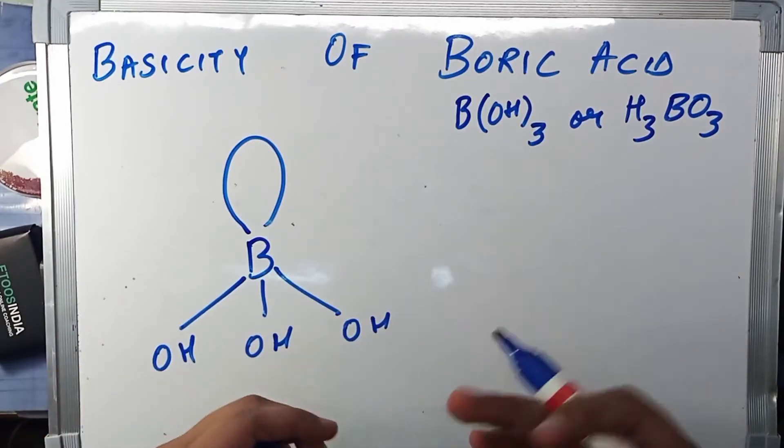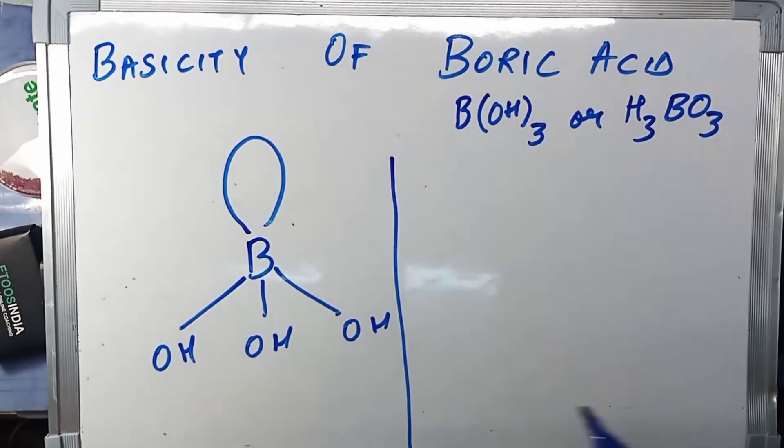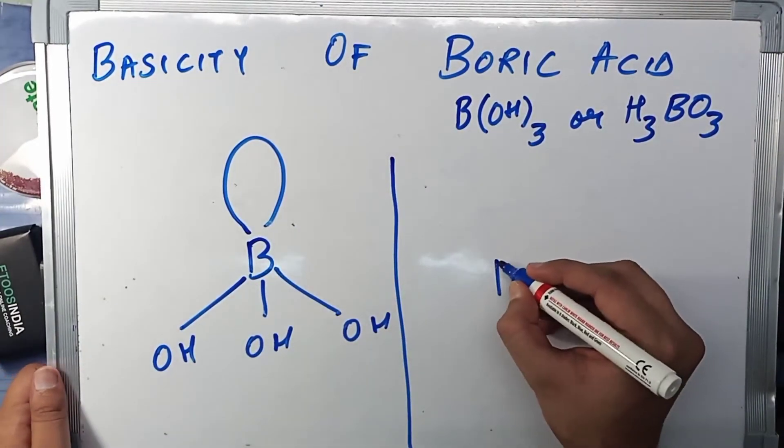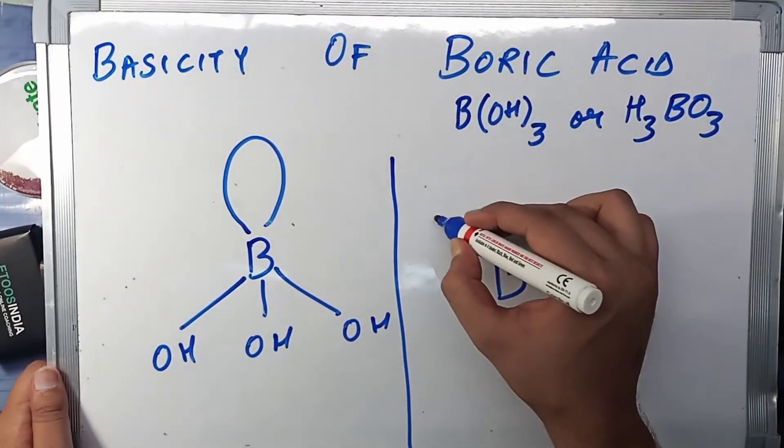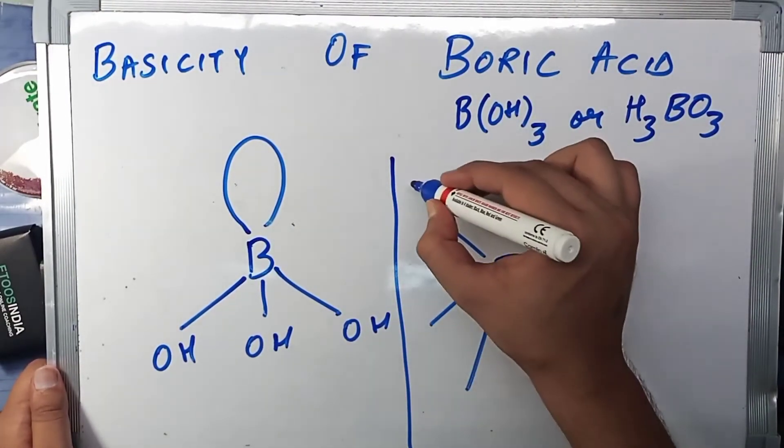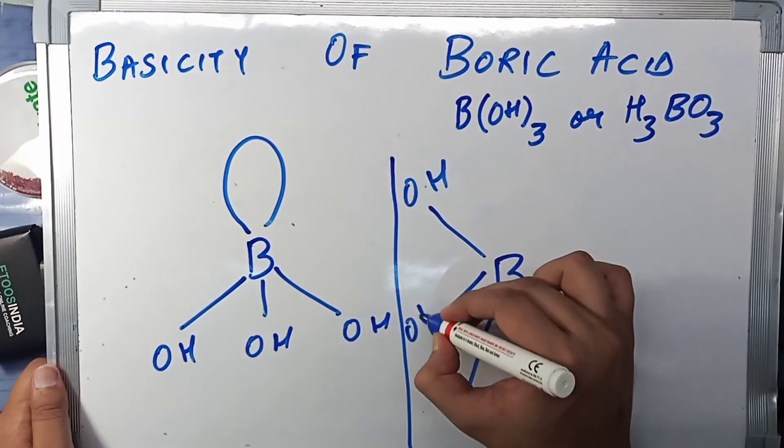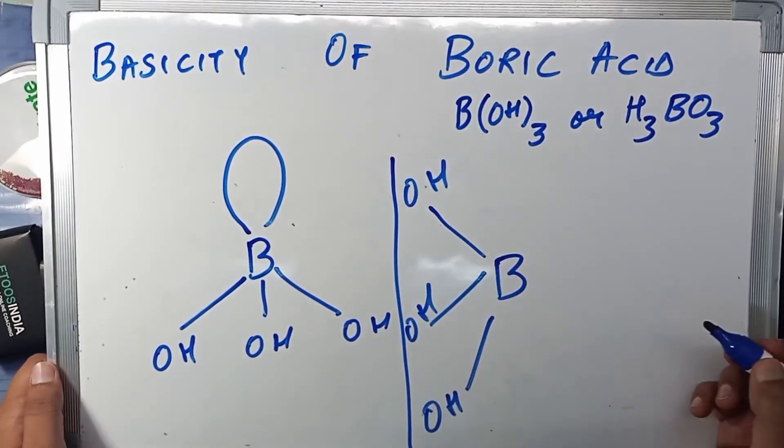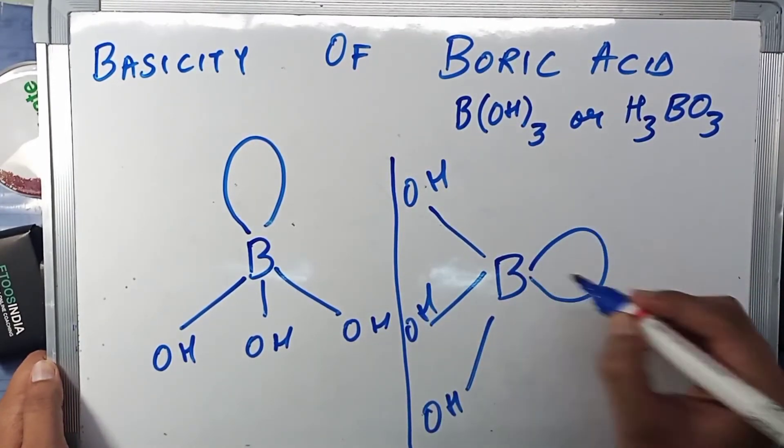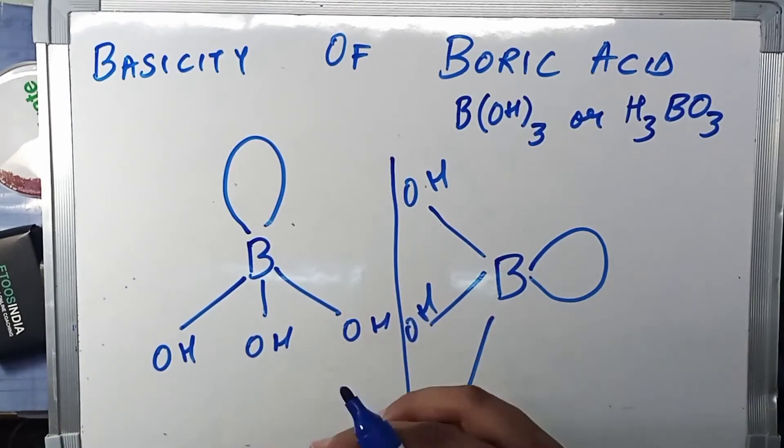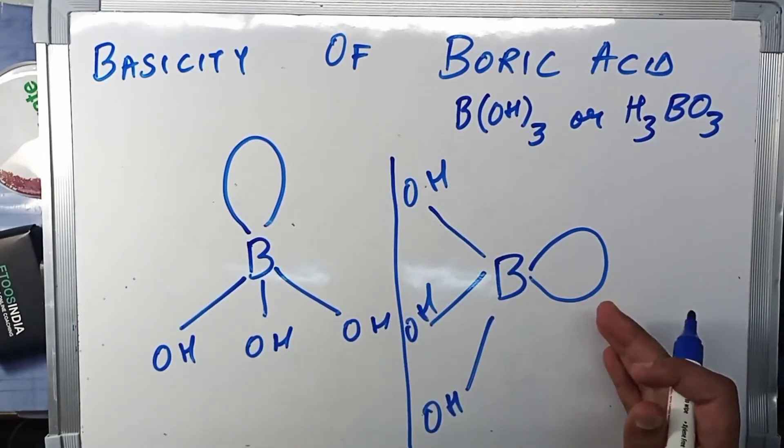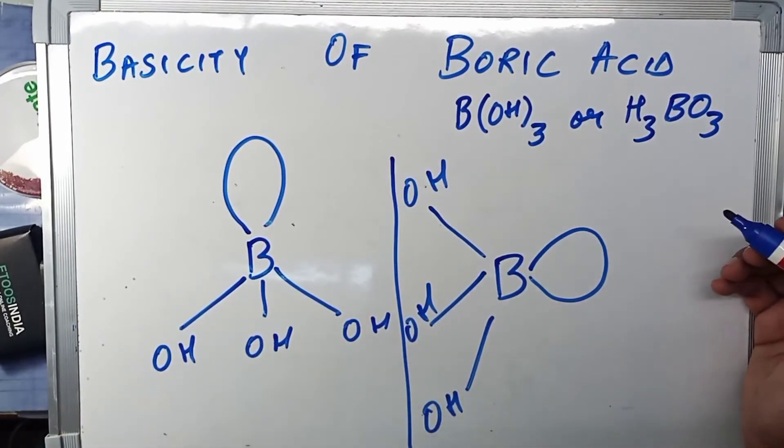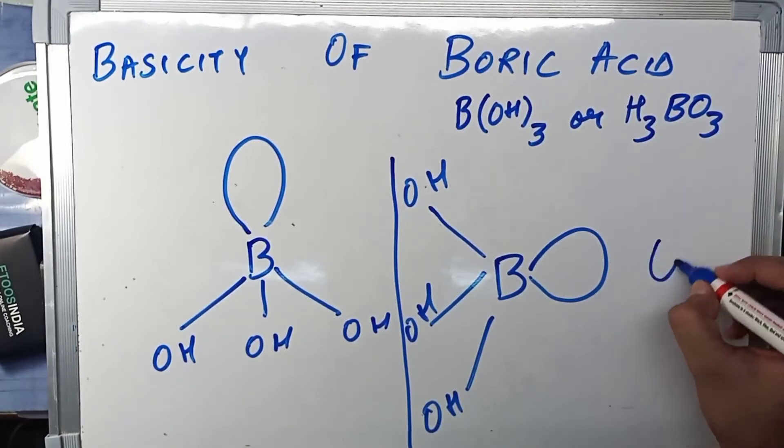So what actually happens is that when we drop or throw boric acid in water—this is boric acid, B with OH, OH, OH—and it has a vacant orbital, a 2p vacant orbital.